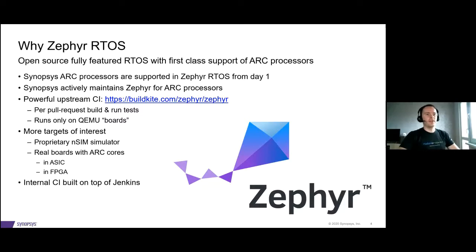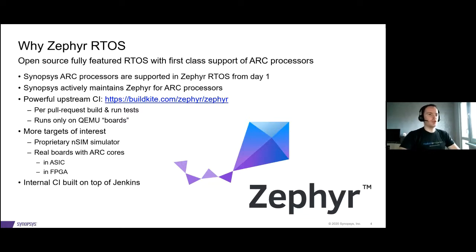Zephyr development is moving very fast — last month we saw more than 900 commits merged into the main source tree from 140-plus developers. That's about 30 commits per day, and some of them are more than just a one-line change. The rate of change is huge, which makes it very hard to ensure that whatever worked yesterday still works today.